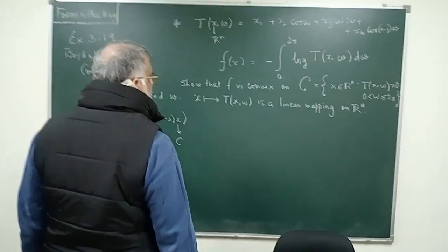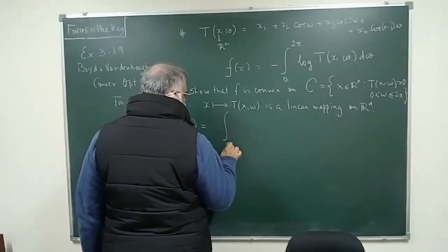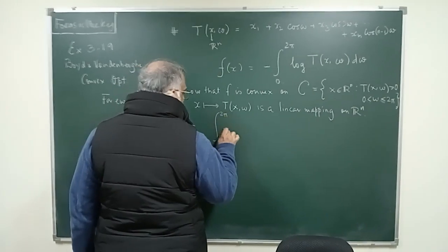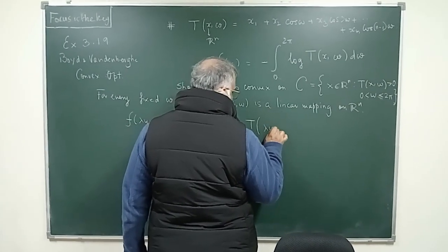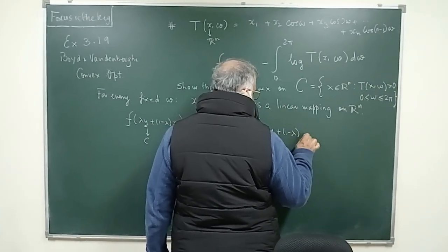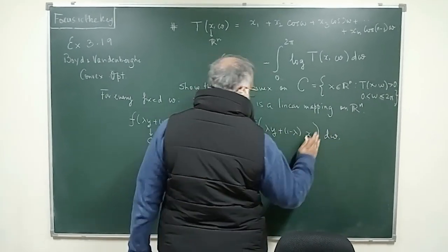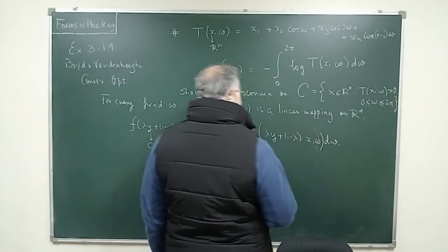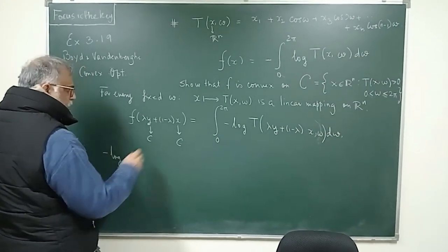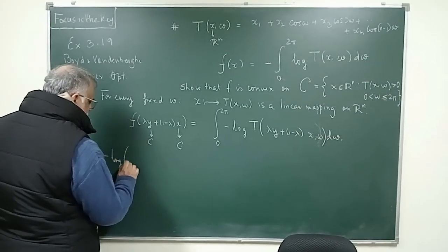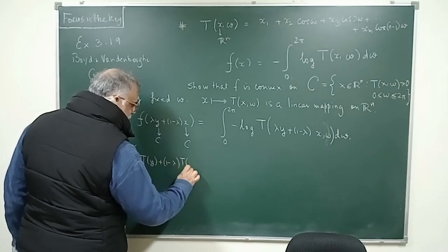Now, what would happen is that this can be written as the integral from 0 to 2π of -log(T(λy + (1-λ)x, ω)) dω. Now, take a fixed ω. Because you know that T is a linear function, you can write this as λT(y,ω) + (1-λ)T(x,ω).